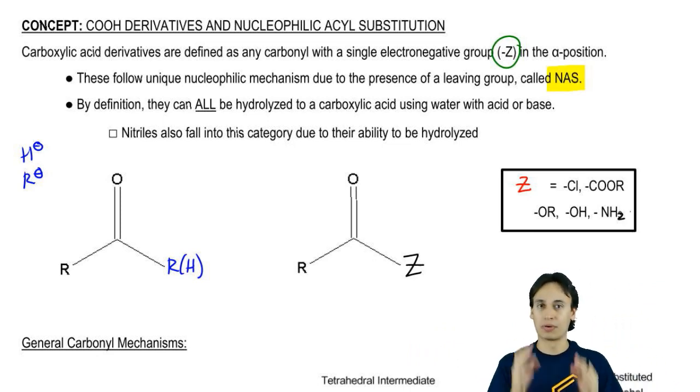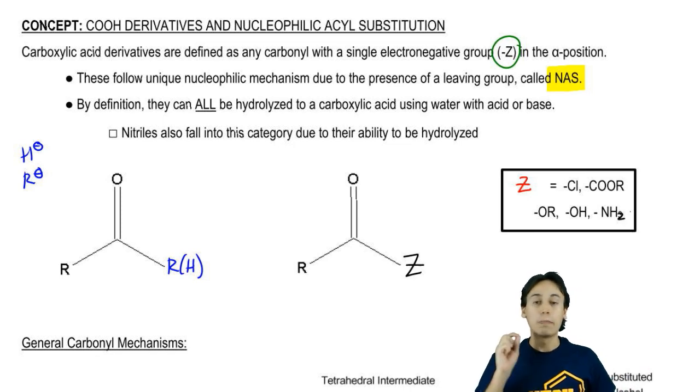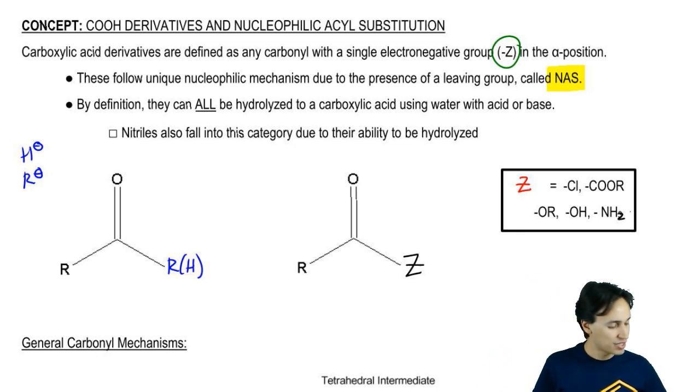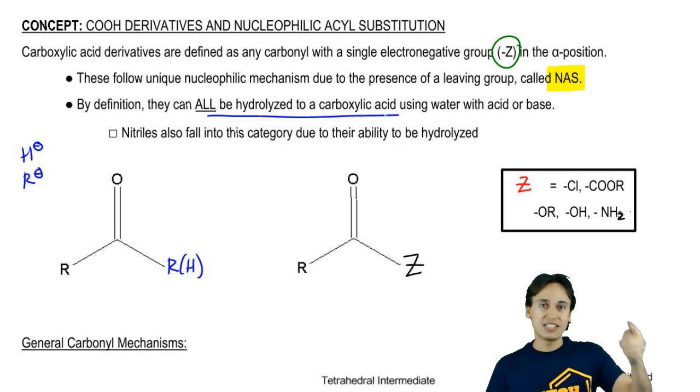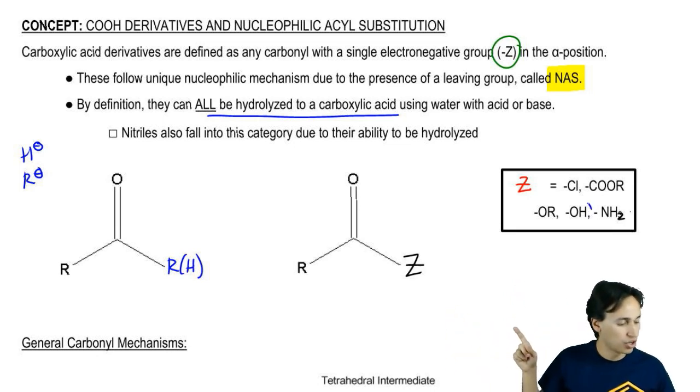A few more definitions about carboxylic acid derivatives. By definition, anything that we call a carboxylic acid derivative can be hydrolyzed back to carboxylic acid using a combination of water with acid or base. If I ever tell you that this is a carboxylic acid derivative, that is me saying that you could use water to hydrolyze it back to carboxylic acid, which as you see, carboxylic acid would be if I used an OH.